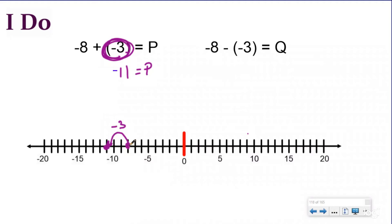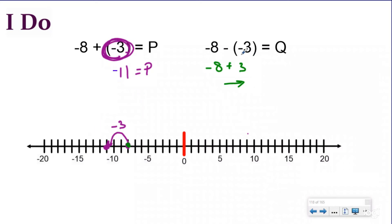Here we're starting at negative eight again, but we are subtracting a negative. Since subtraction is dead, we rewrite this as its additive inverse: negative eight plus the opposite of negative three, which is positive three. So we're going to be adding positive three. This tells us to move to the right three places, because adding a positive means we go right. Moving three units to the right, we end up with q equal to negative five.